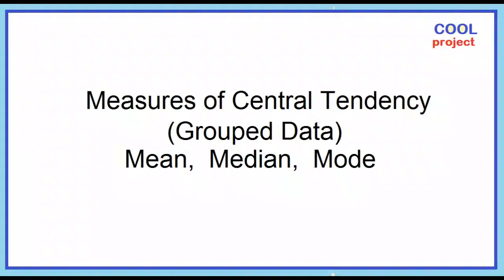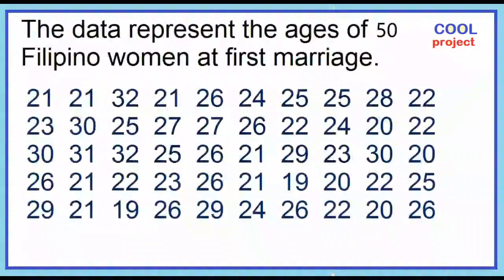Measures of Central Tendency: Group Data — how to find the mean, median, and mode. The data represent the ages of 50 Filipino women at first marriage.